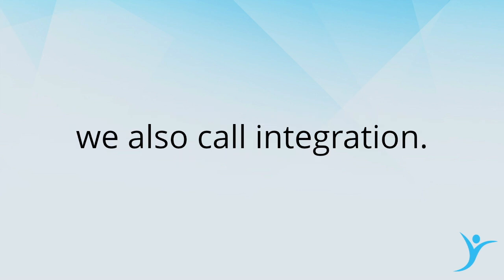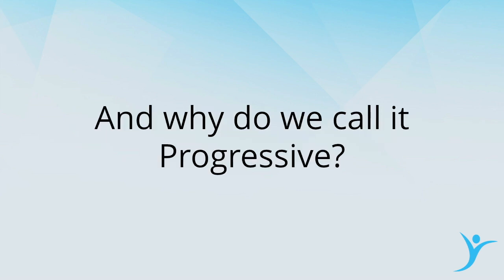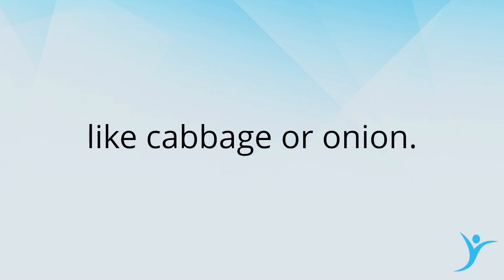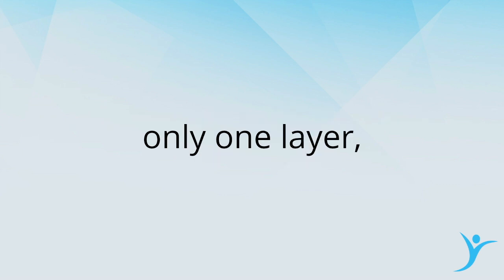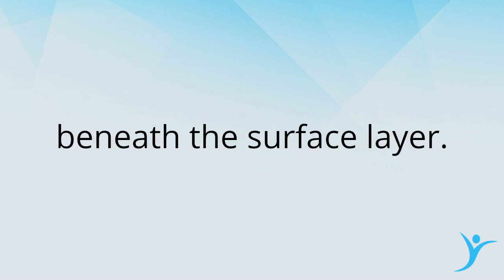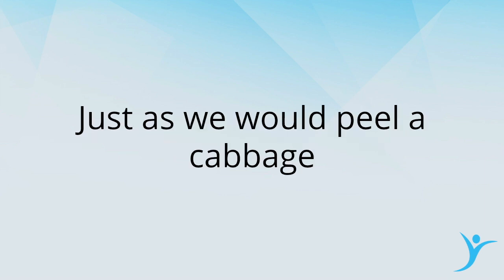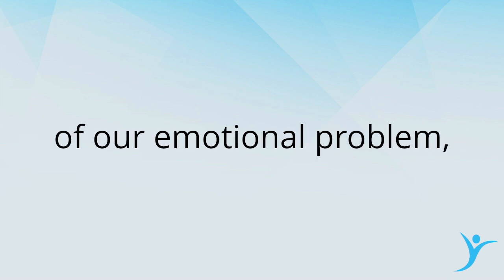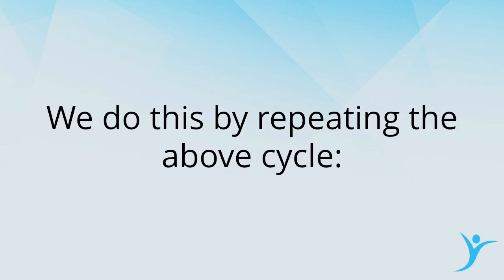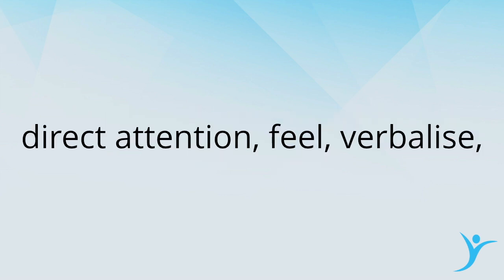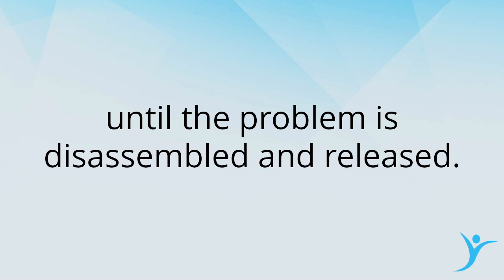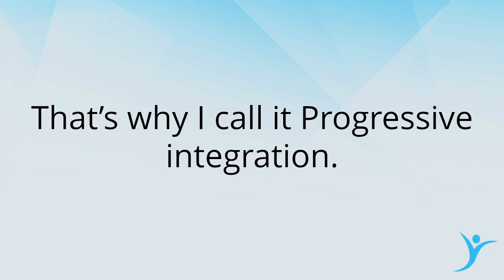We also call this integration, and why do we call it progressive? Most of our problems are multi-layered, like cabbage or onion. It is not enough to make conscious only one layer, because there are other layers beneath the surface. Just as we would peel a cabbage until nothing is left, we need to peel all the layers of our emotional problem. We do this by repeating the cycle — direct attention, feel, verbalize — going deeper and deeper until the problem is disassembled and released. That's why it's called progressive integration.